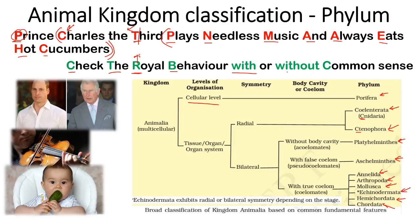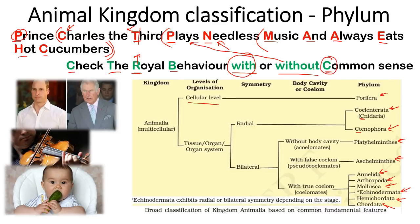In the bilateral group, 'with or without' refers to body cavity or coelom. Without a body cavity — that is acoelomate — is Platyhelminthes. With a pseudocoelom or false body cavity is Nematoda (Aschelminthes). The rest — Mollusca, Annelida, Arthropoda, Echinodermata, Hemichordata, and Chordata — all have a fully formed coelom and are coelomates.